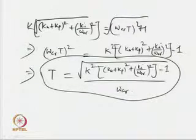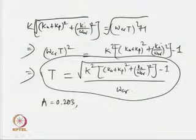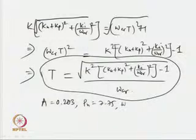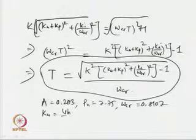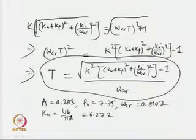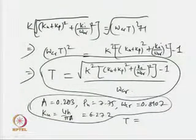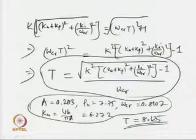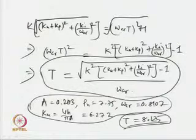Substituting the measured values A = 0.203 and P_u = 7.75 (so ω_cr = 0.8107), and K_u = 4H/(πA) = 6.272, we get T estimated as 8.125. This should have been 10. The approximation of the relay by the describing function introduces almost 20% error in the time constant estimation.